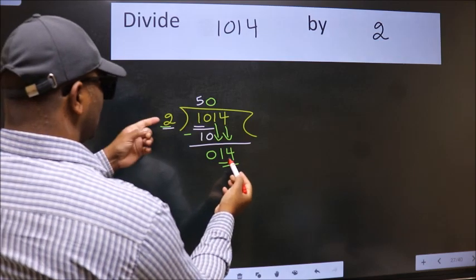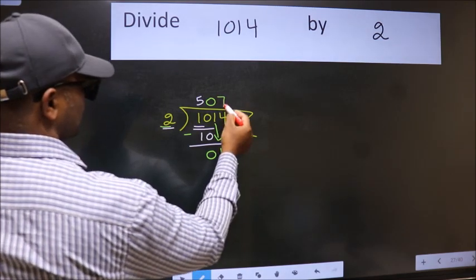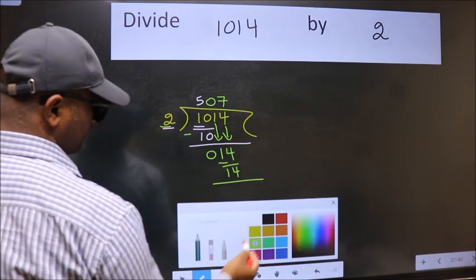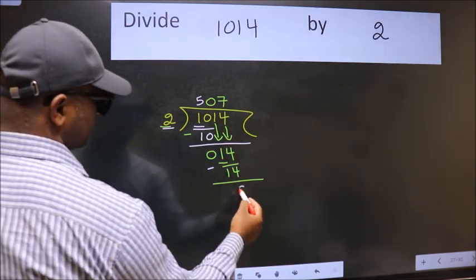When do we get 14 in 2 table? 2 sevens 14. Now we subtract. We get 0.